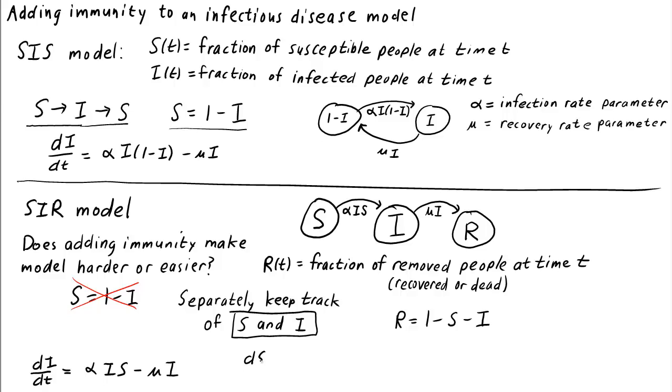For the equation for s, we just need to include the fact that s will decrease, or the change will be negative when susceptible individuals become infected, which is at the rate alpha times i times s.